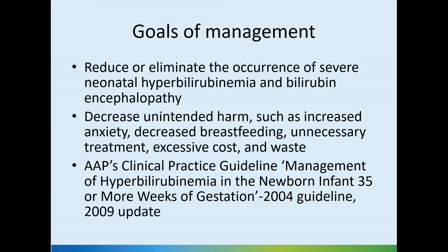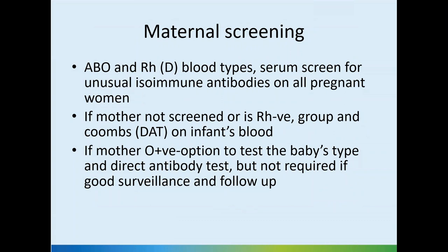The AAP clinical practice guideline for management of hyperbilirubinemia in newborn infants 35 or more weeks of gestation came out in 2004 with an update in 2009. Maternal screening includes ABO and RH blood types, and serum screening for unusual isoimmune antibodies in all pregnant women. If the mother is not screened or is RH negative, blood group and Coombs test should be done on the infant's blood. If the mother is O positive, testing the baby's type and direct antibody test is an option, especially if the baby is A, B, or AB.